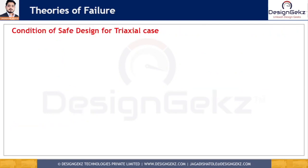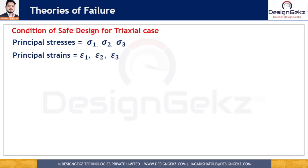Now consider the safe design condition for the triaxial case. Consider the principal stresses for three-dimensional or triaxial conditions as sigma 1, sigma 2, and sigma 3, and the corresponding strains induced in the component as epsilon 1, epsilon 2, and epsilon 3. Let us assume that epsilon 1 is greater than epsilon 2, which is greater than epsilon 3.